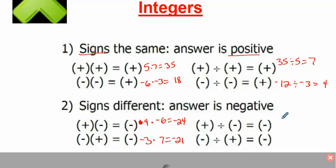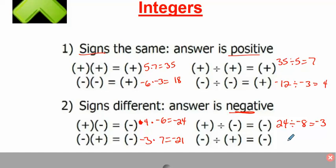Same thing with division. Let's go 24 divided by negative 8: that would give me 3, and there's a positive divided by a negative, so you would have a negative answer. If you have one of each, you're going to have that negative answer. Negative 60 divided by 6: 60 divided by 6 is 10, and you keep your negative. That's all it is.